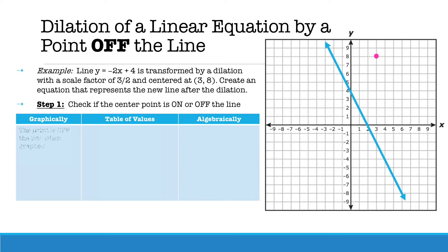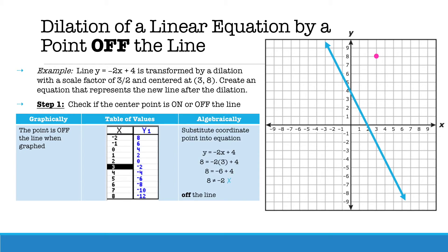When you graph it, you can see that the point is off the line. If you look at your table of values, the coordinate point is not in the table of values. And algebraically, when you substitute the coordinate point into the equation, you will see that 8 does not equal negative 2, which represents the point is off the line.